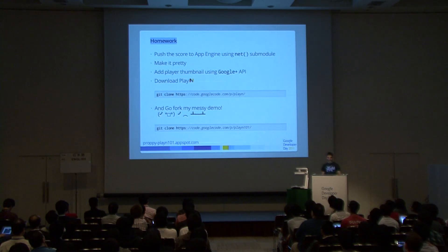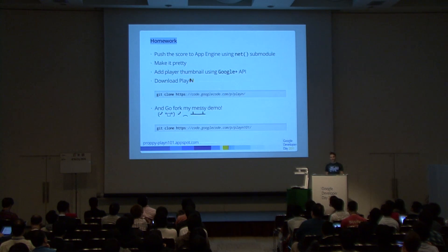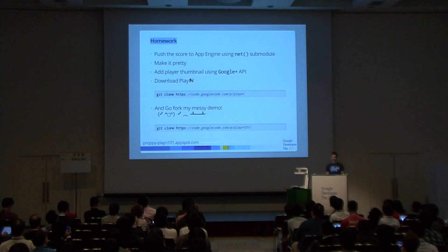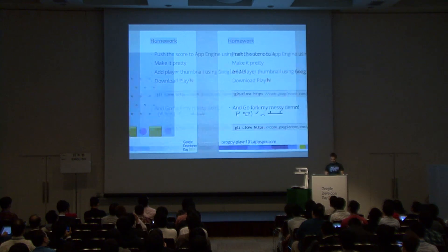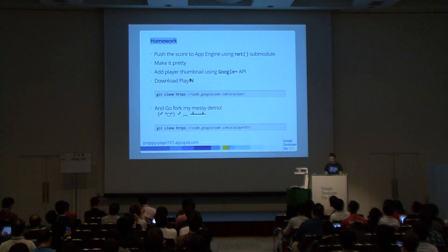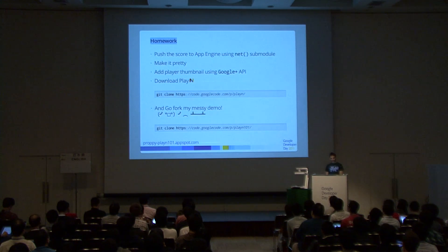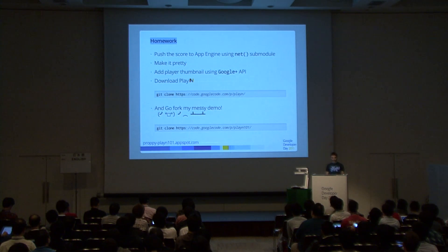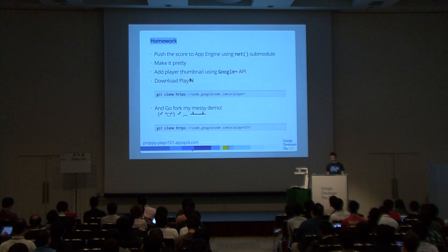Here's some homework: you could improve this demo by storing the score on App Engine using the Net module, making it prettier with animated sprites at the bottom, or adding the current player's thumbnail using the Google Plus API. If you have spare time, download PlayN and fork the messy code using the provided command — look at how bad it is and try to improve it.